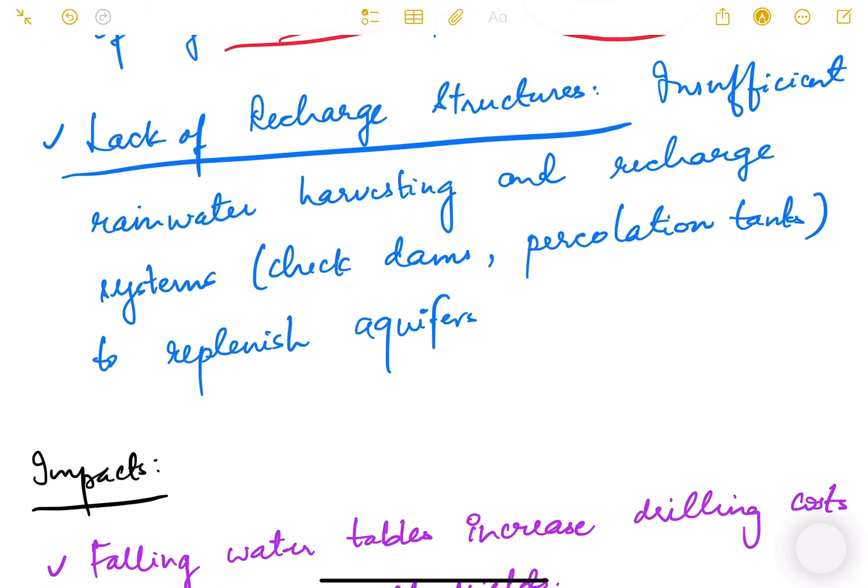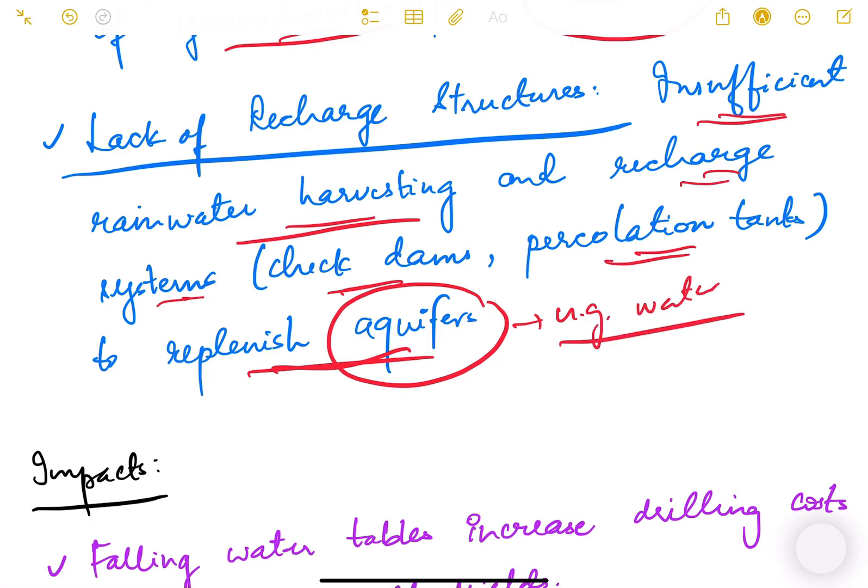There is insufficient rainwater harvesting and recharge systems like check dams and percolation tanks to replenish aquifers. Aquifers are basically underground water reservoirs.